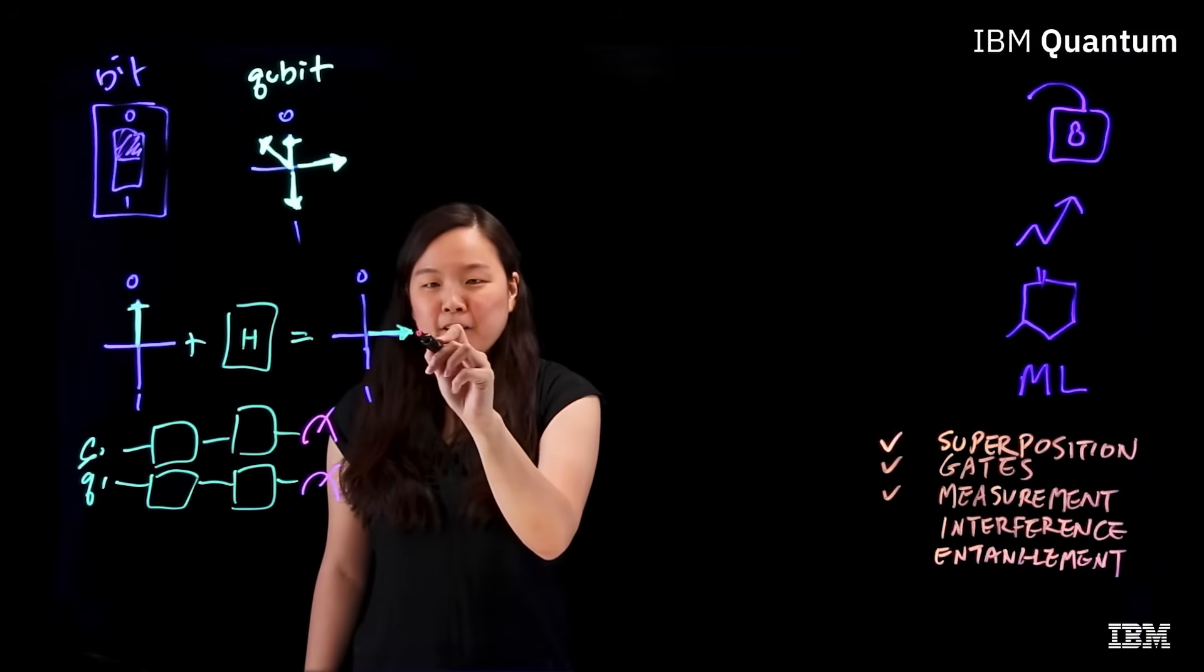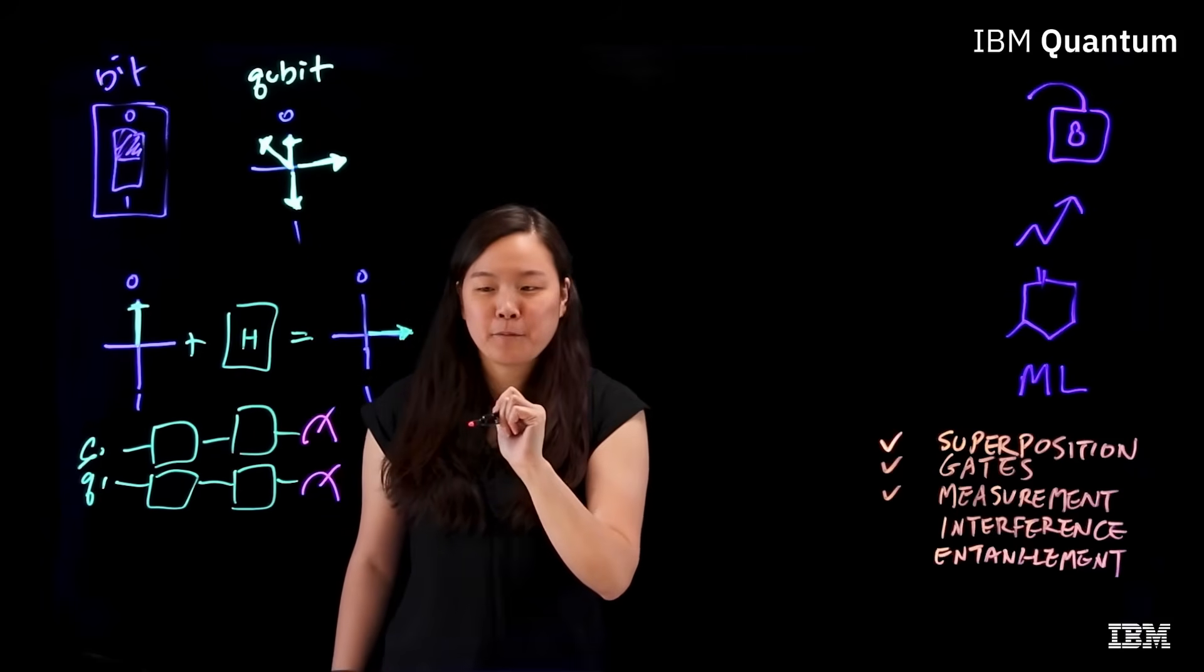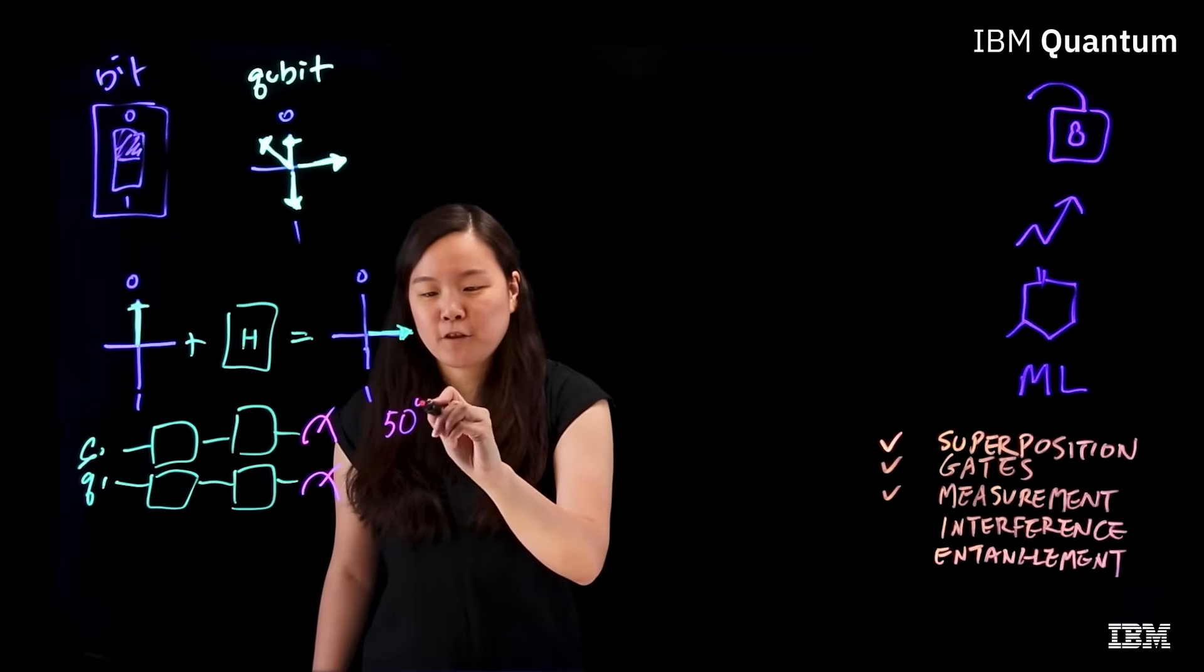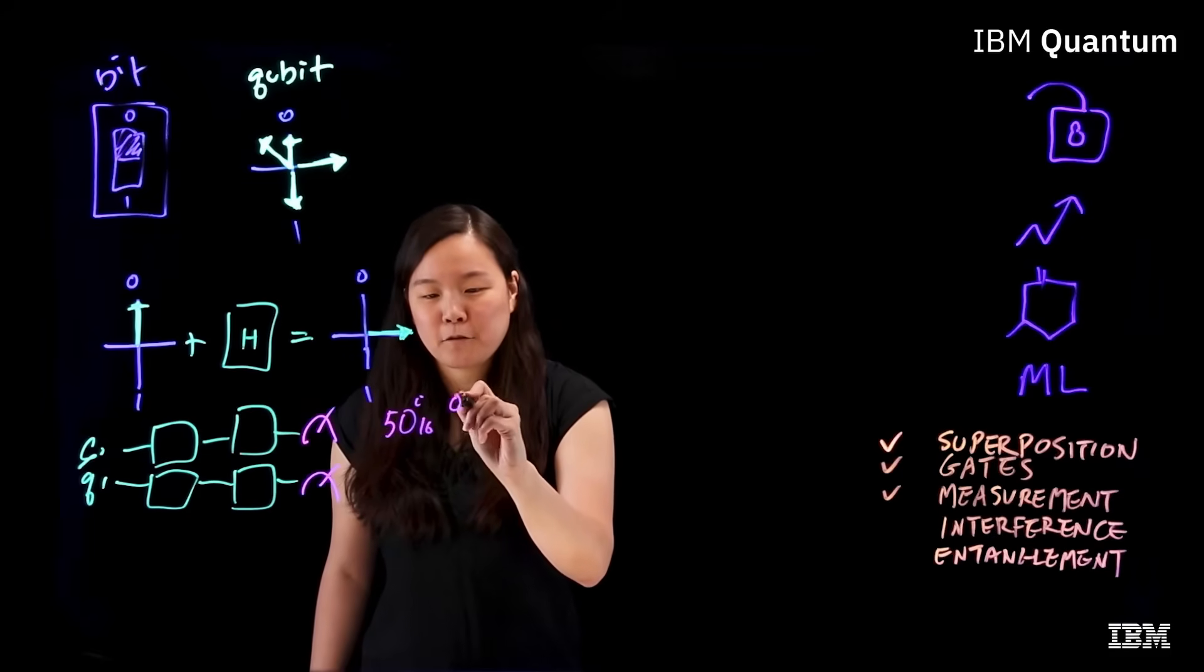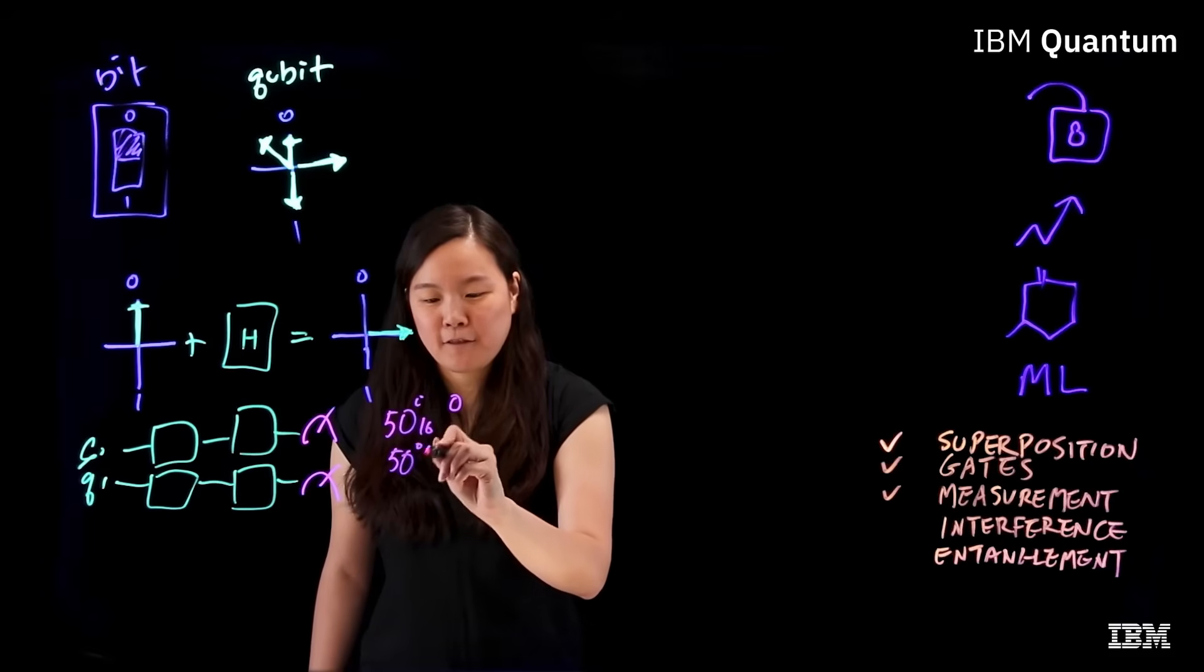That means an arrow pointing this way does not measure a 0.5. Instead, it has 50% chance of measuring a zero and 50% chance of measuring a one.